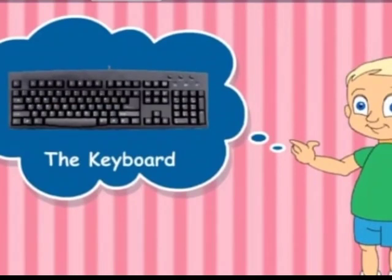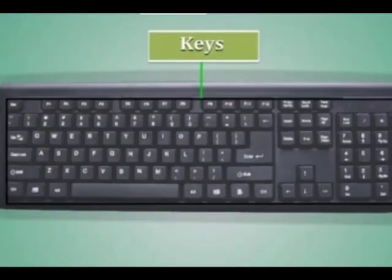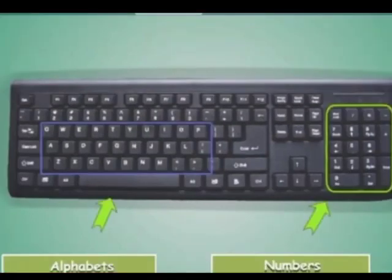The keyboard is connected to the CPU by a wire. The keyboard has many small buttons called keys. These keys are placed to type alphabets or numbers. You can see different sets of keys on the keyboard.